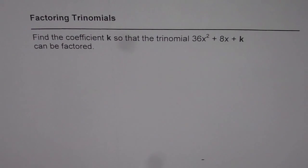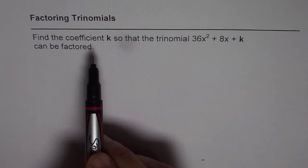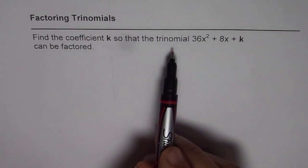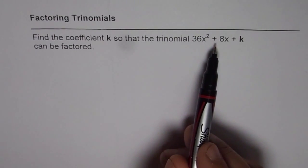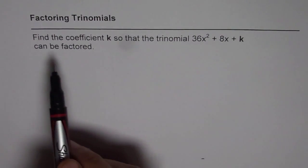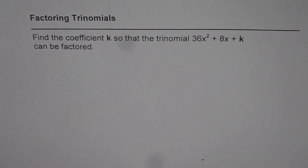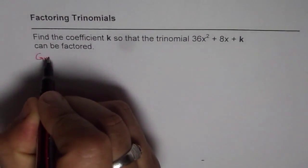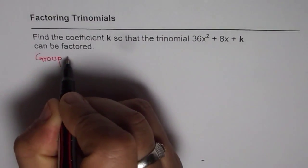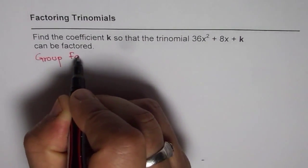Let's read this question once again. It says, find the coefficient k so that the trinomial 36x² + 8x + k can be factored. Now it does not really specify in what manner. This is a difficult question. But what you can do is, you can think about group factoring.